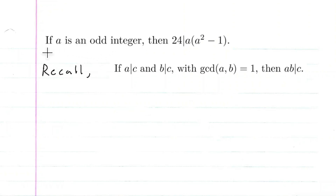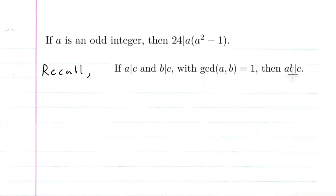We're going to do the next exercise in Burton's number theory book that says that if A is an odd integer, then 24 divides A times A squared minus 1. We're going to recall this theorem we've proven before: if A divides C and B divides C with the GCD of A and B equal to 1, then A times B divides C. So the first thing we're going to want to do is show that 3 divides this and 8 divides this.